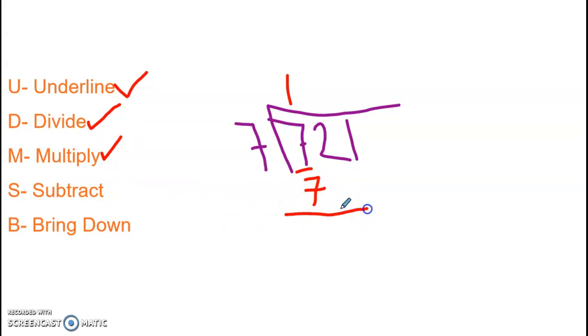Then I subtract. Again, easy. Subtract. 7 minus 7 is 0. Easy.